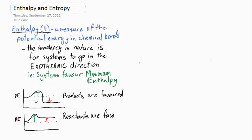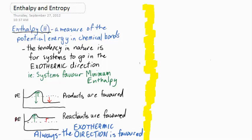For the endothermic reaction, the situation is reversed. Reactants are favored because of the lower activation energy in the reverse direction. Always it's the exothermic direction that's favored.